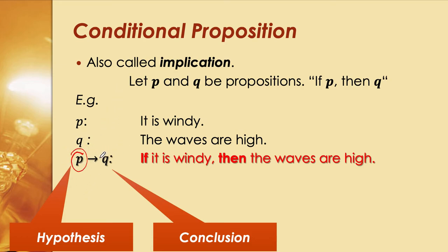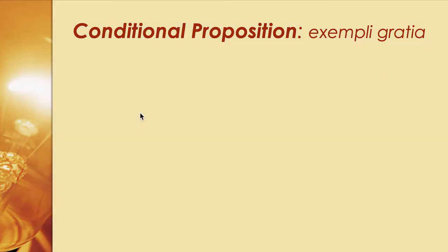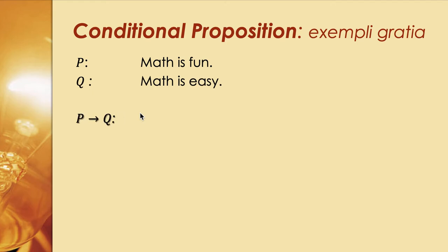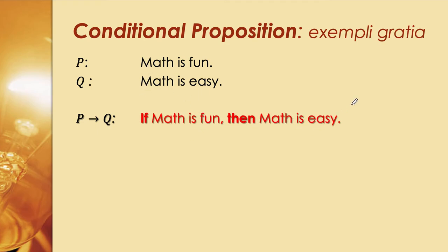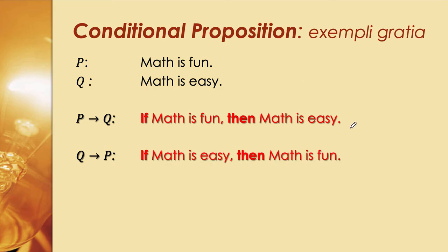For example, with p = 'math is fun' and q = 'math is easy': p → q is 'If math is fun, then math is easy.' q → p is 'If math is easy, then math is fun.' Notice that the direction of the arrow matters — p → q is different from q → p. The order of conditional propositions is very important.